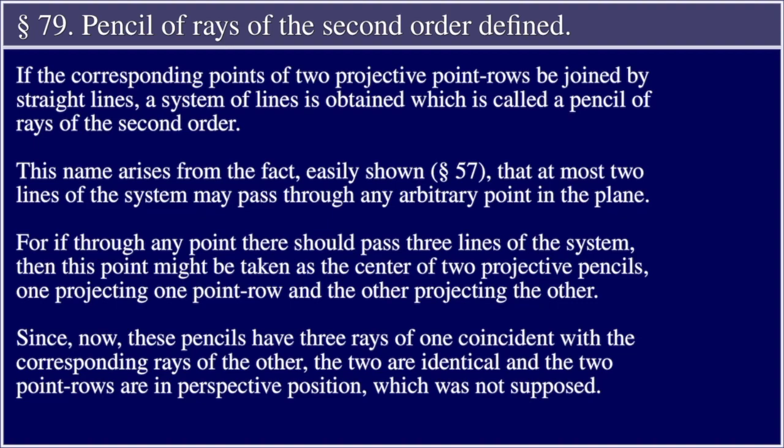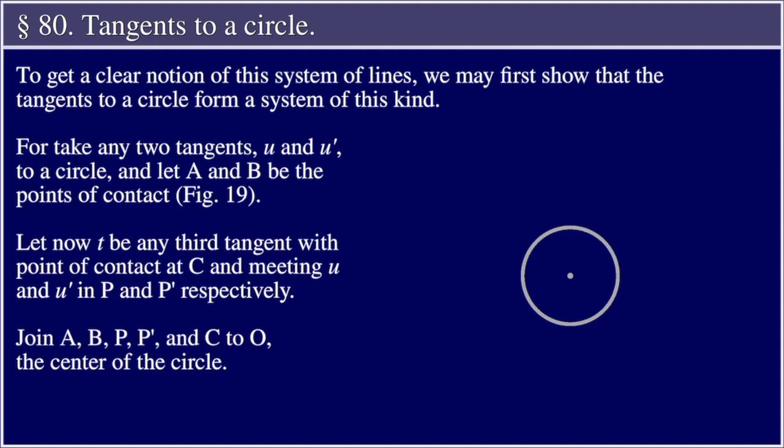Since now these pencils have three rays of one coincident with the three corresponding rays of the other, the two are identical, and the two point rows are in perspective position, which was not supposed.